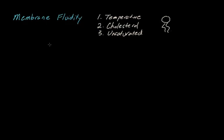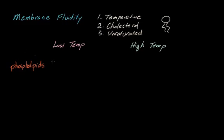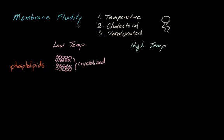The first thing we're going to start with is temperature — low temperature and high temperature. If our cell membrane is only made up of phospholipids, at low temperatures our phospholipids are going to start clustering together really closely, because they don't have a lot of energy to move around. At extremely low temperatures, we call this a crystallized state, and since they're huddled close together, the fluidity is actually pretty low. So as temperature decreases, the fluidity of the cell membrane also decreases.